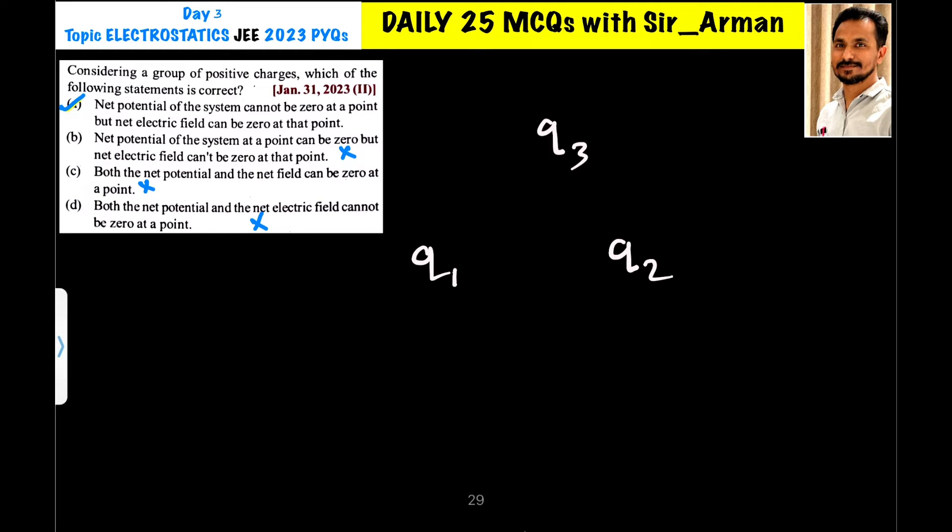Now, the first point: net potential of the system cannot be 0 at a point, but net electric field can be 0 at a point. So, let us assume I have a system of two charge only. Let us assume I have this charge Q1 here, another charge Q2 here.